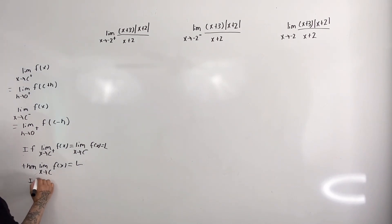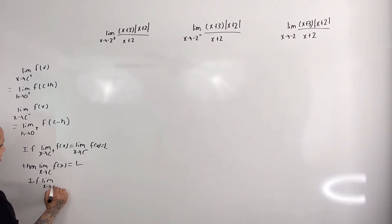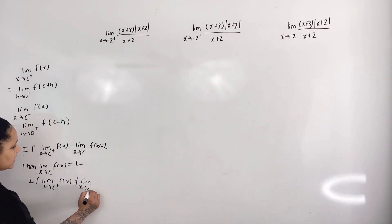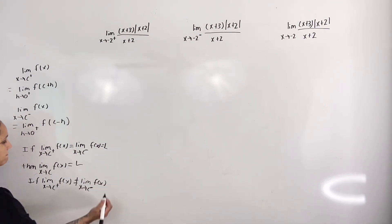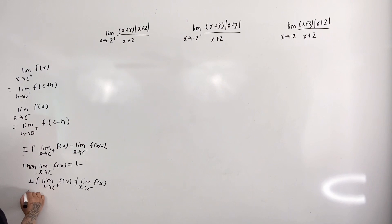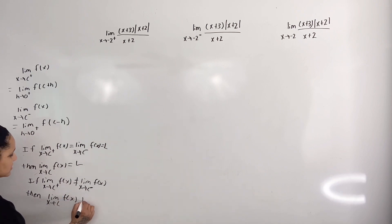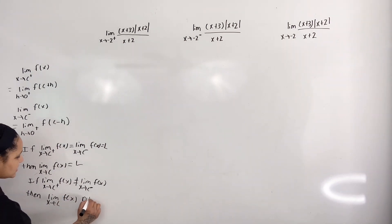Also, if the limit as x approaches c from the right of f(x) does not equal the limit as x approaches c from the left of f(x), then the limit as x approaches c of f(x) does not exist.